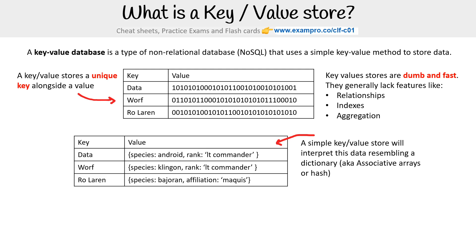When you look at a document database, that is just a key-value store that interprets the value as being documents. Key-value stores can and do commonly store multiple values, like an associated array — that's pretty common. So even for DynamoDB, that's how it does it.